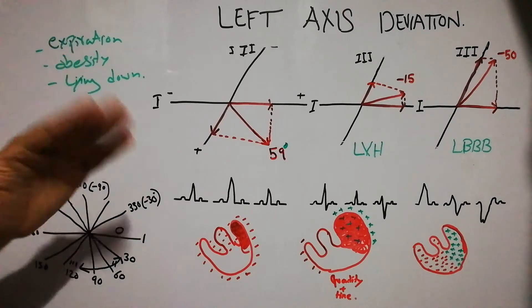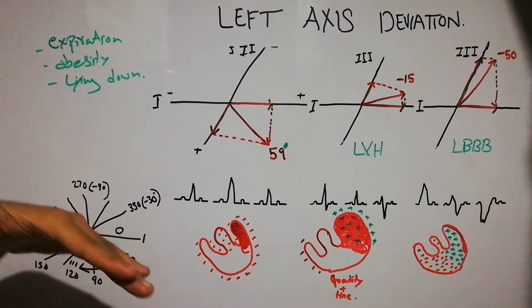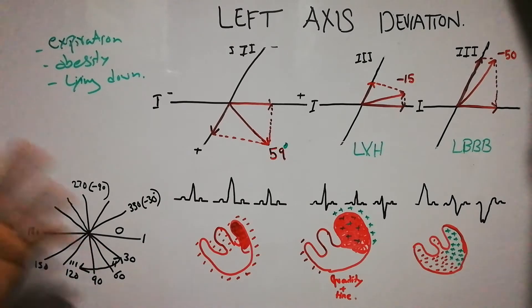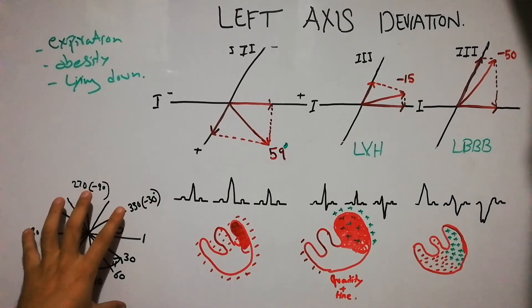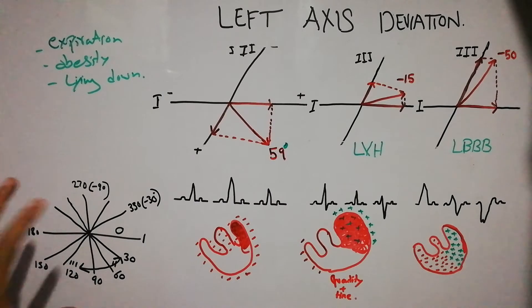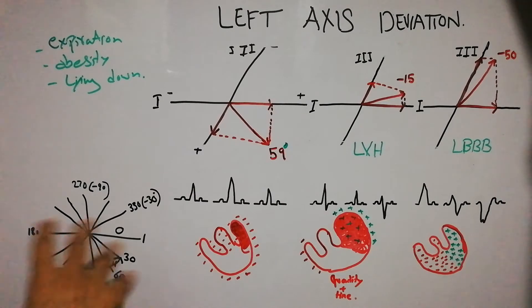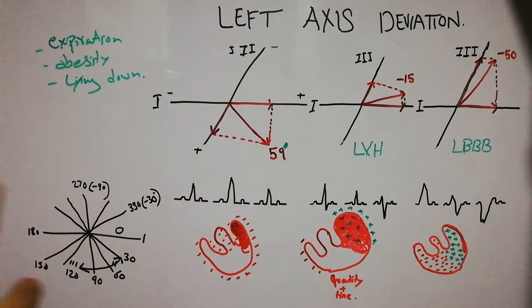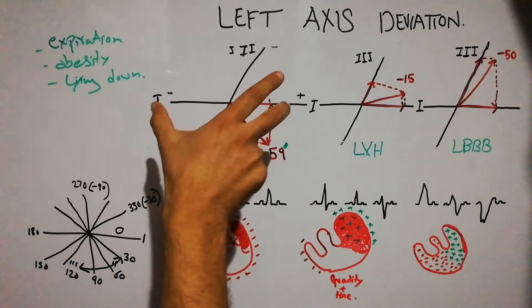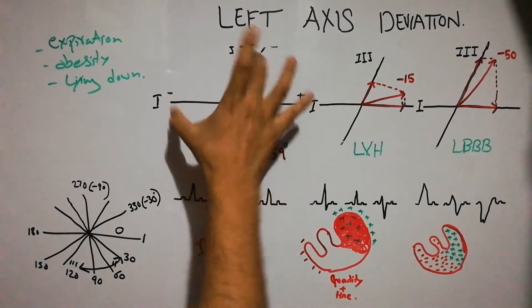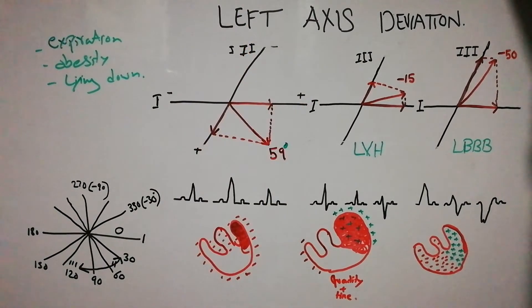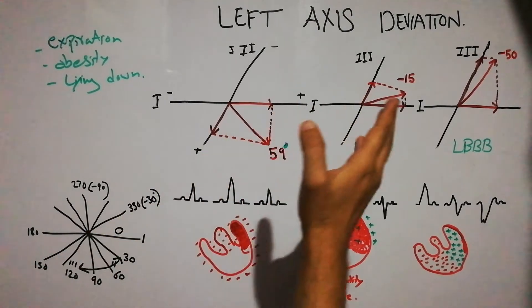The direction of the cardiac axis or cardiac vector keeps changing, but the values of these leads on the measuring scale remain fixed. With the help of this measuring scale we determine the direction of the cardiac axis. We consider only lead 1 and lead 3 to determine the mean QRS ventricular axis.